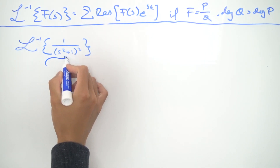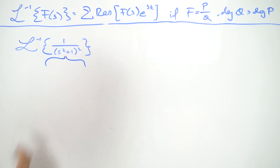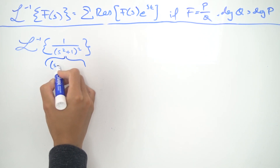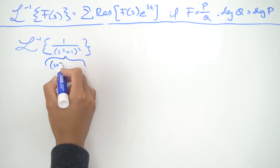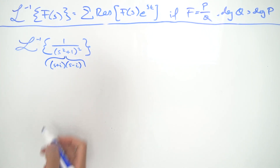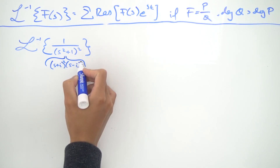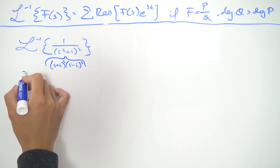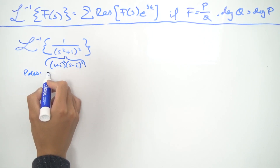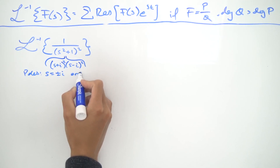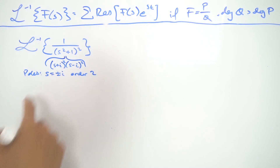For the poles, let's start by factoring the denominator. Notice that s² + 1 can be written as (s + i)(s − i), and since we're squaring everything, we square both of those factors. So clearly the poles are at s = ±i, and these are order-two poles because we have linear factors that are being squared.